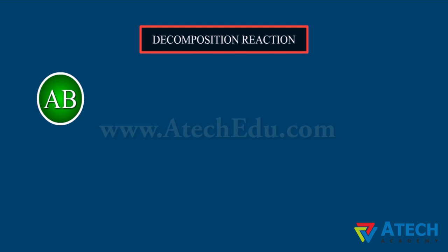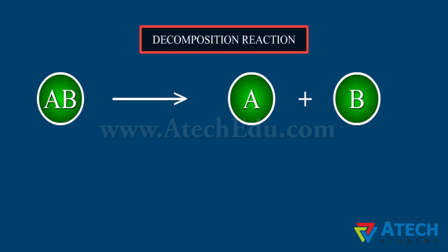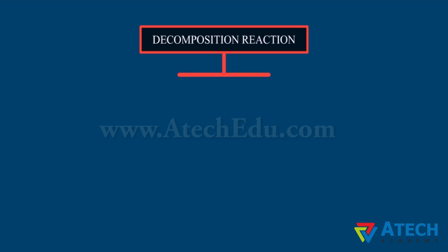Decomposition Reaction is a reaction in which a single substance decomposes to give two or more substances. It is the opposite of a combination reaction. The general form is: when substance AB decomposes, it breaks into substances A and B. Decomposition reactions can occur due to heat, electricity, or light energy.